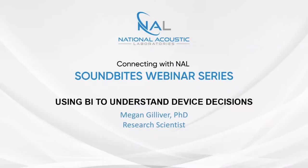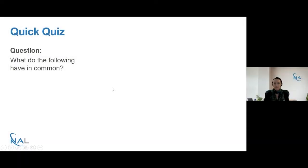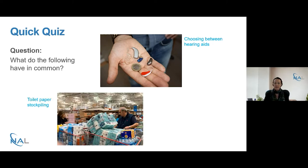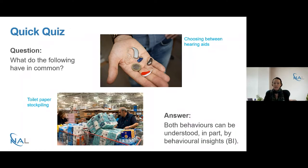Today we're going to be talking about how we can use behavioural insights to understand device decisions. I'm going to start with a quick quiz. What do the following have in common? Choosing between hearing aids and toilet paper stockpiling. It might seem like these two things don't have a lot in common, but in fact both of them can at least in part be understood by behavioural insights, and we're going to talk about that today.